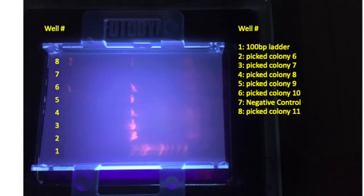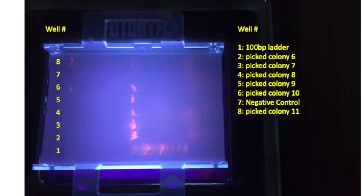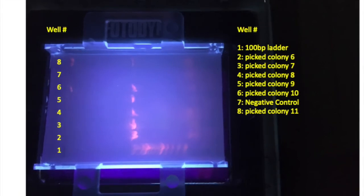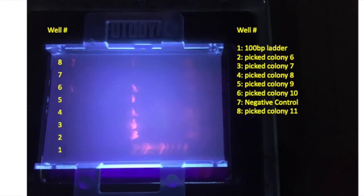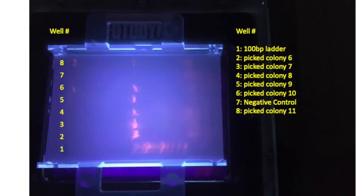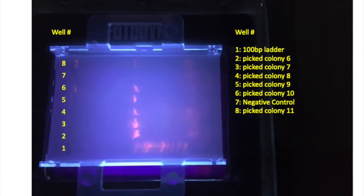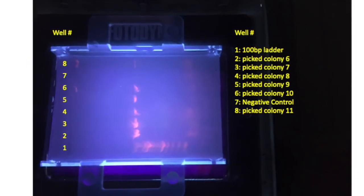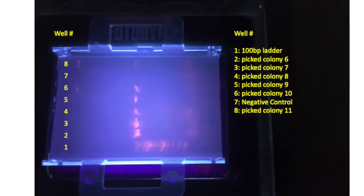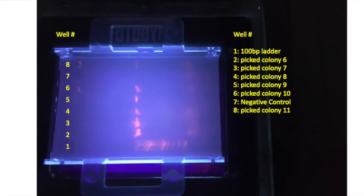In this other gel, not all the samples amplified as well as in that first gel. But even the sample that's shown in the far lane, in lane 8, even though it's faint, that amplification is sufficient for Sanger sequencing to be done successfully. If you're not sure, show your instructor the results of your electrophoresis.